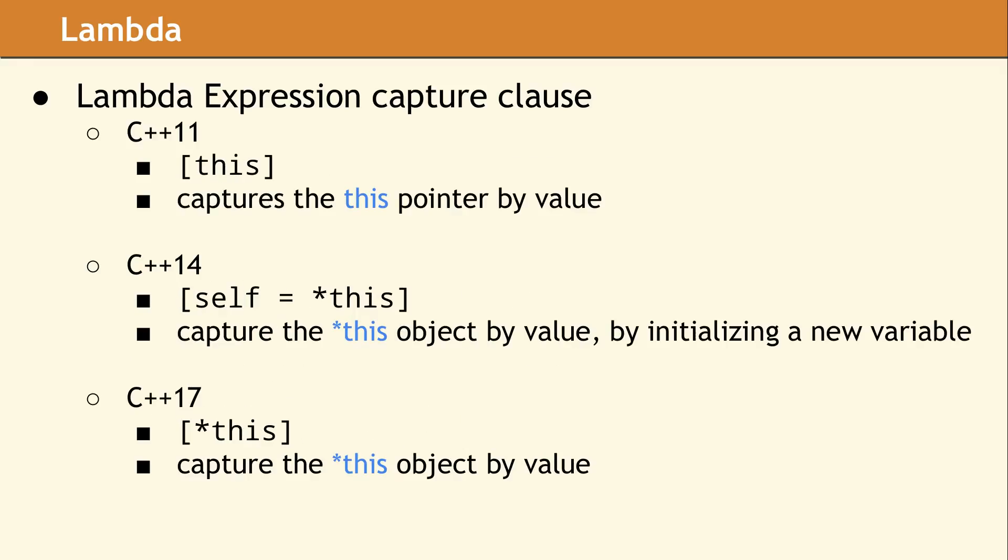In C++11, the only way to capture this was by capturing the this pointer by value. The capture clause was extended in C++14, so the expression which is captured could include a pointer dereference. Having this ability allows you to initialize a captured variable with the object *this. In C++17, the capture clause was enhanced again, to allow a capture of the object *this, without requiring it to be renamed. In both of these examples, when the pointer dereference is captured, a copy of the object is made.